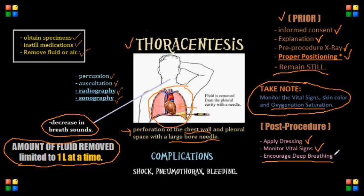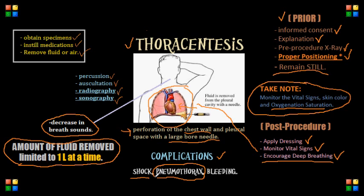Complications from this procedure include shock — monitor for hypotension and reflex bradycardia, which are the main symptoms. Pneumothorax can also occur, so monitor for its signs and symptoms; the number one symptom to know for your NCLEX is diminished breath sounds. Obtain a post-procedure x-ray. Another complication is bleeding, so monitor the client's coughing and check for hemoptysis or blood in the sputum.